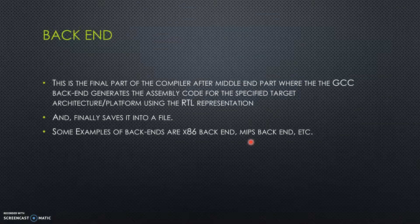The back-end receives the RTL representation and then finally generates the assembly code for the specified target architecture using the RTL representation, and saves this into a file. Some examples of back-ends are x86 and MIPS.